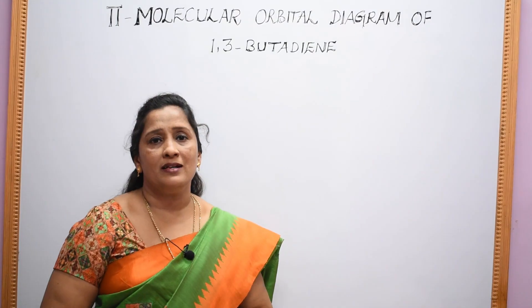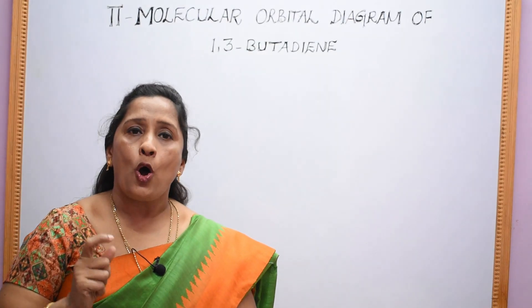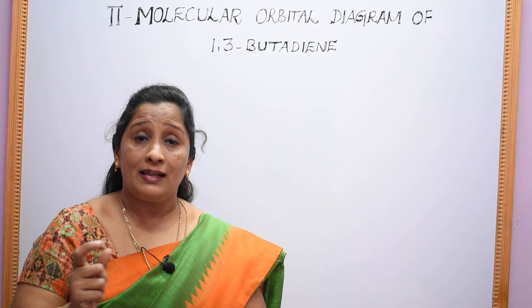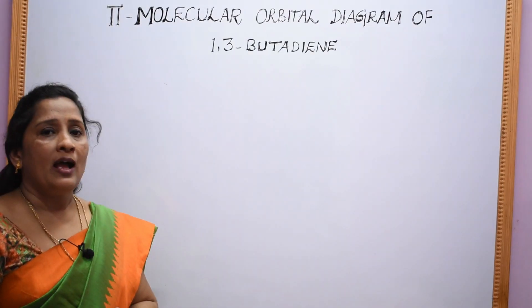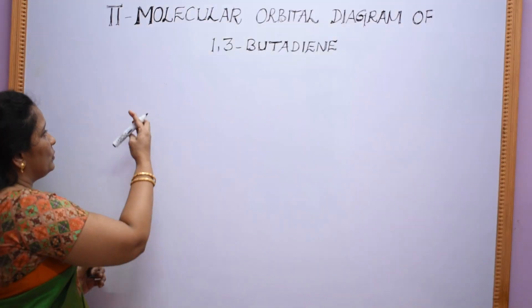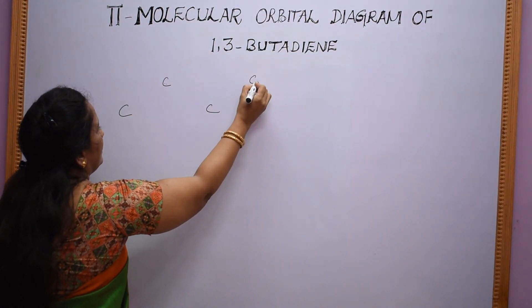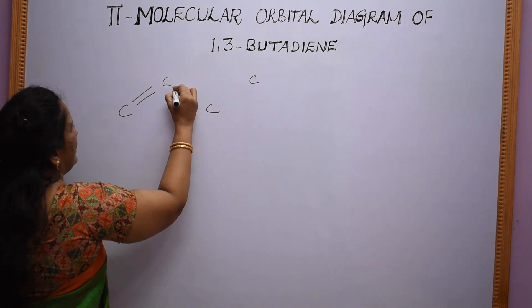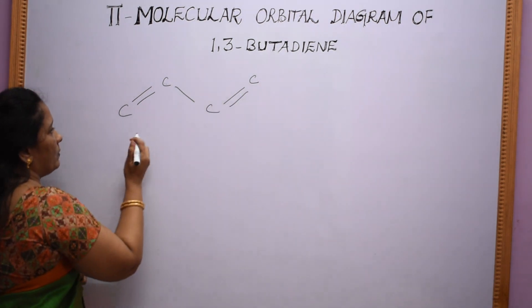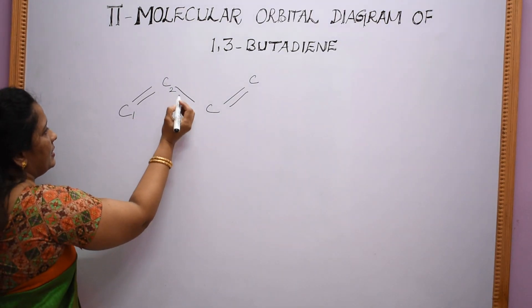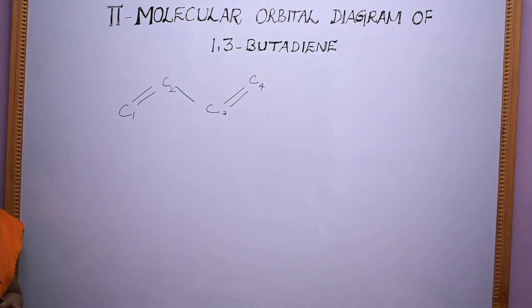1,3-butadiene is a conjugated diene, that means this molecule contains alternate double bonds. It is a diene molecule — we have two double bonds in this molecule. This is the structure of butadiene, having alternate single and double bonds with four carbon atoms, designated as C1, C2, C3, and C4.